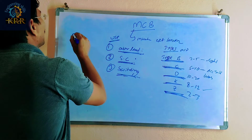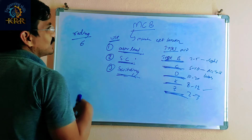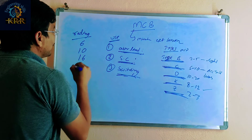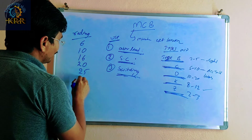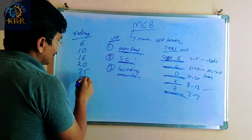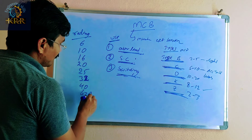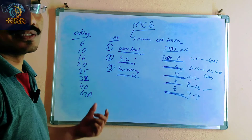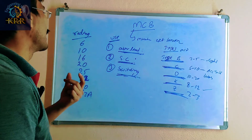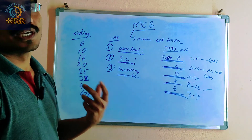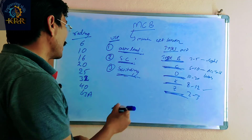The ratings of MCBs available are: 6A, 10A, 16A, 20A, 25A, 32A, 40A, and 63A. As per our requirement, we can select the appropriate rating of MCB.